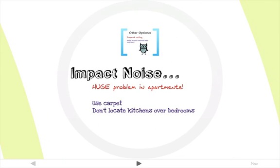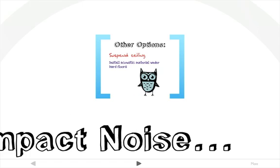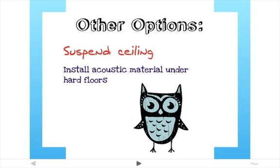Impact noise is often the greatest issue in buildings with multiple residents, so carpets should be installed in apartments and hotel rooms to help cushion the sound. Also, don't locate noisy areas like kitchens and bathrooms over sleeping areas. Another option is to suspend the ceiling from the floor above.